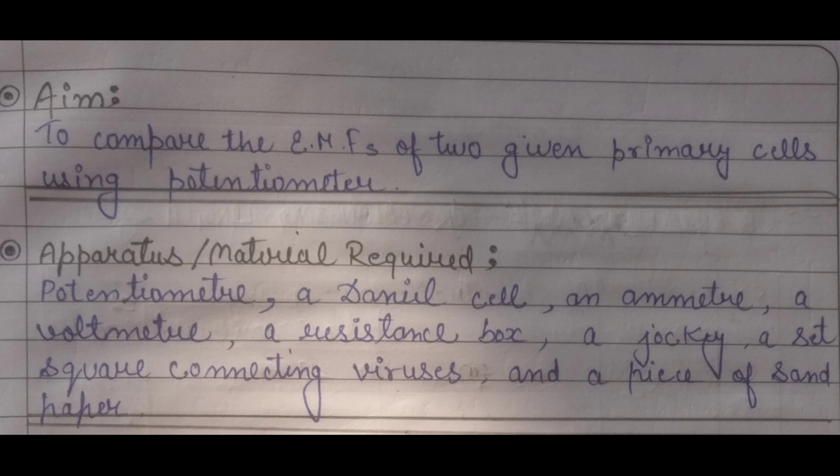The aim of this practical is to compare the EMFs of two given primary cells using a potentiometer. The apparatus or materials required is a potentiometer, a Daniel cell, an ammeter, a voltmeter, resistance box, a jockey, a set square, connecting wires, plugs, and a piece of sandpaper.